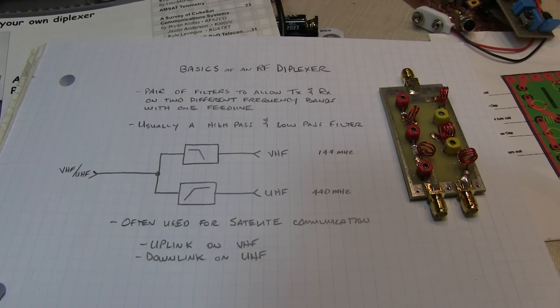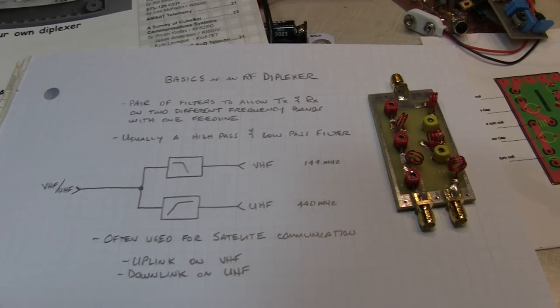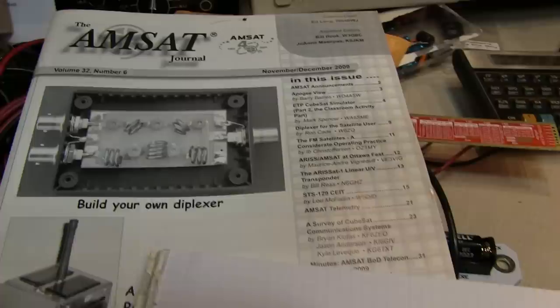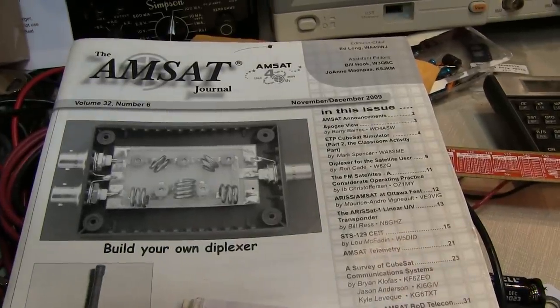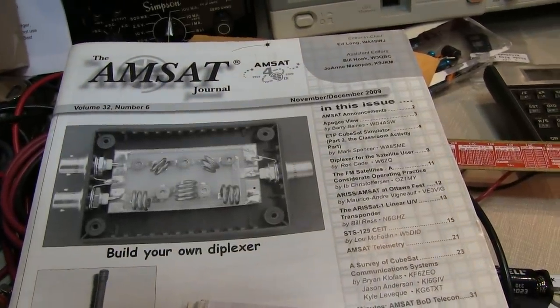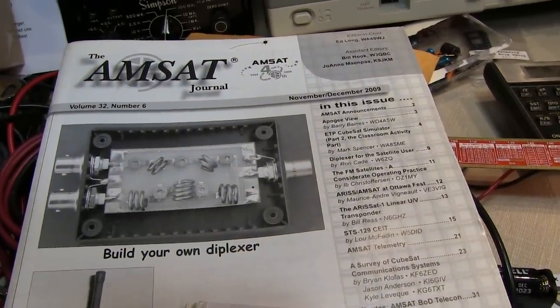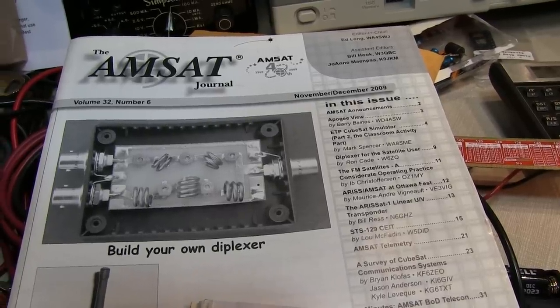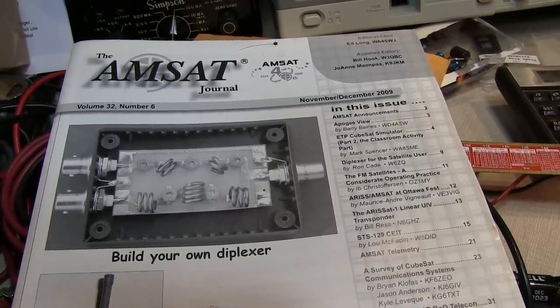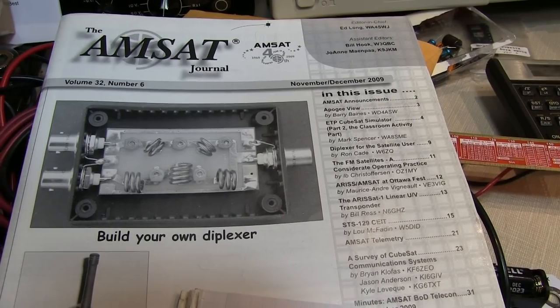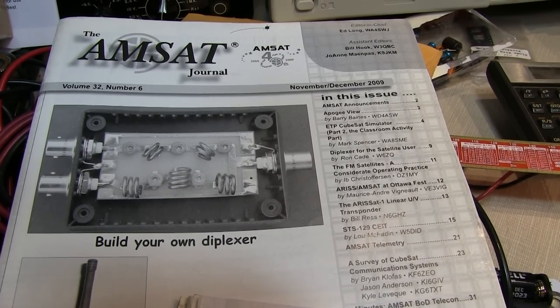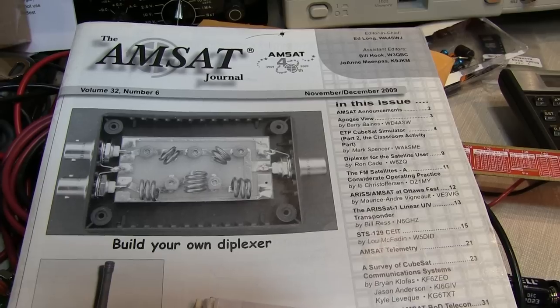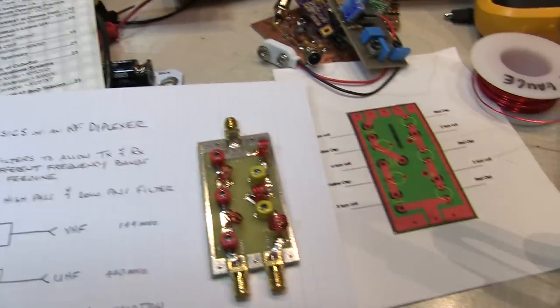The diplexer we're using in this video is this board right here that I've assembled. It was featured in the November-December 2009 issue of the AMSAT Journal. AMSAT is the Radio Amateur Satellite Corporation, an organization focused primarily on amateur radio satellite operation. In this issue, Ron Kade, W6ZQ, published a short article on building your own diplexer.